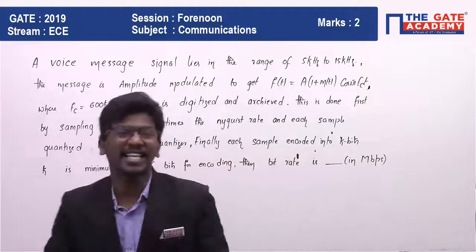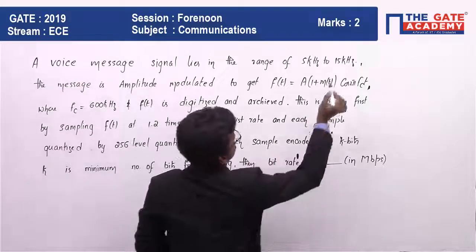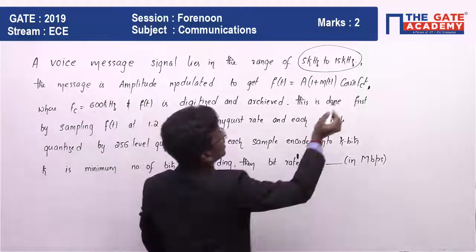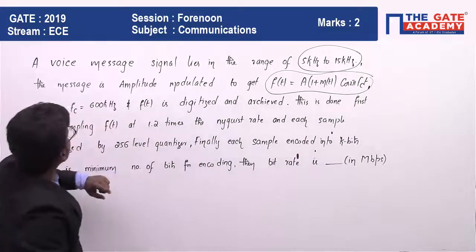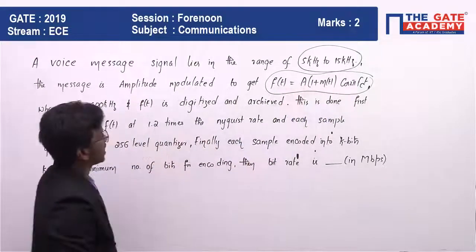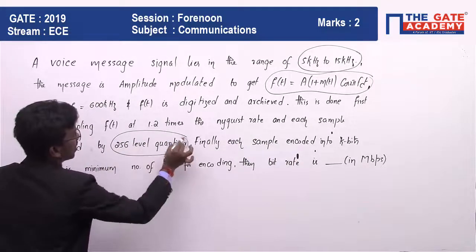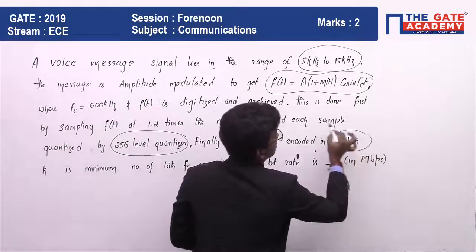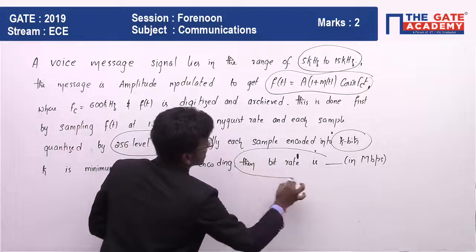The question is a bit lengthy, but retrieving the data: the range of the message signal is given, the message is amplitude modulated with the given formula, and the value of fc is given. The signal is pulse code modulated — sampled first, then encoded. The number of quantizer levels is 256, encoded into k bits. We need to find the bit rate rb.